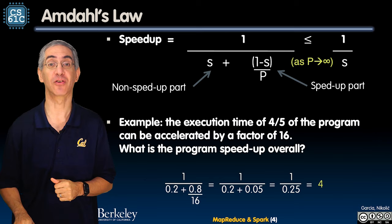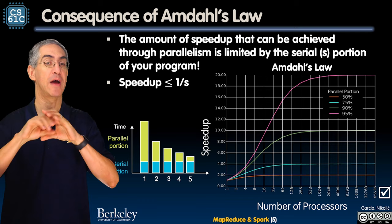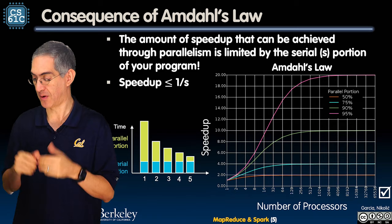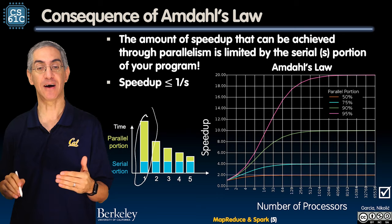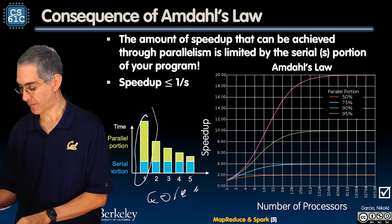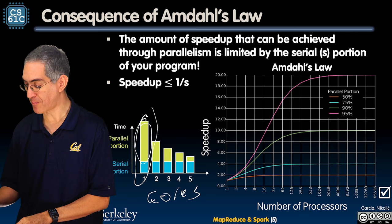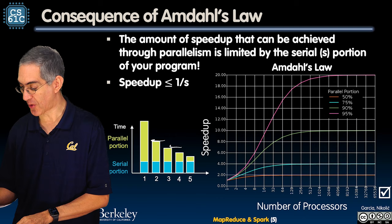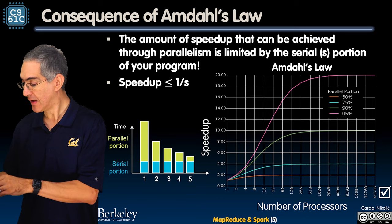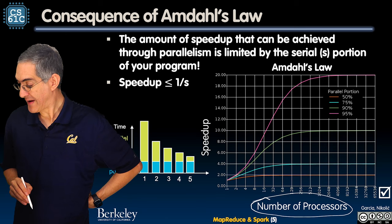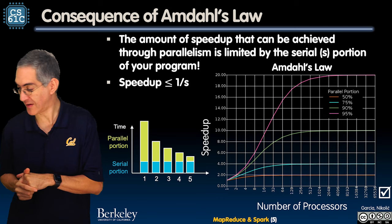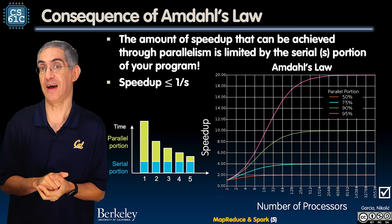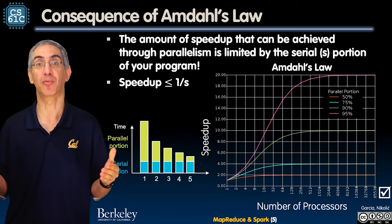Here's a piece of code — S is the serial part and 1 minus S is the parallel part, always fractions. I have a piece of code that's mostly parallel. Every time I add more cores, I shrink this parallel part by that factor. So as I look at the number of processors, depending on the parallel portion, I have different curves for how much speedup I can get. If the parallel portion is only 50% of the code, the serial part is a half, and therefore I only have 2 times speedup — even with an infinite number of processors.